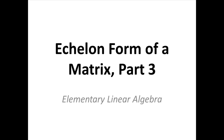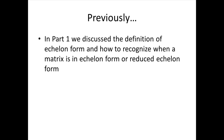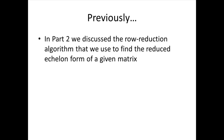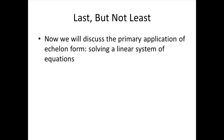This is the last video in our series on echelon form of a matrix. In the first part, we discussed the definition of echelon form and how to recognize when a matrix is in echelon form or reduced echelon form. In part two, we talked about the row reduction algorithm used to find the reduced echelon form. Now we're ready to discuss the primary application of echelon form, which is to find the solution of a linear system of equations.